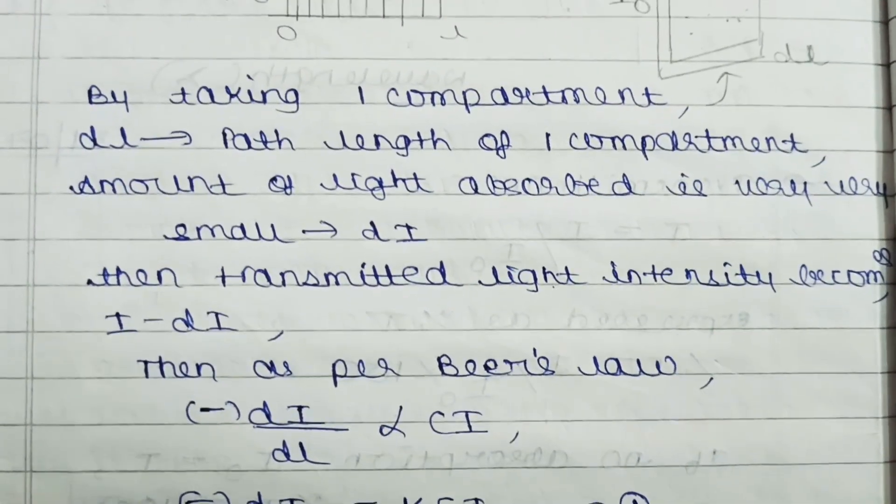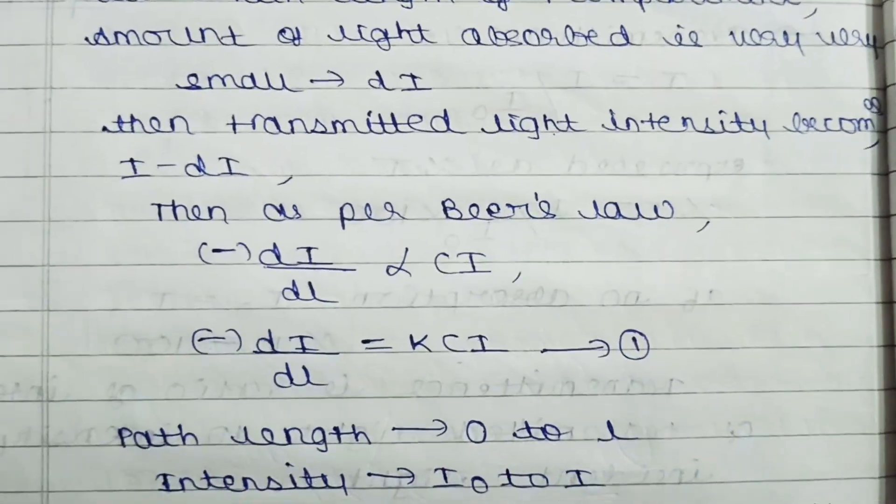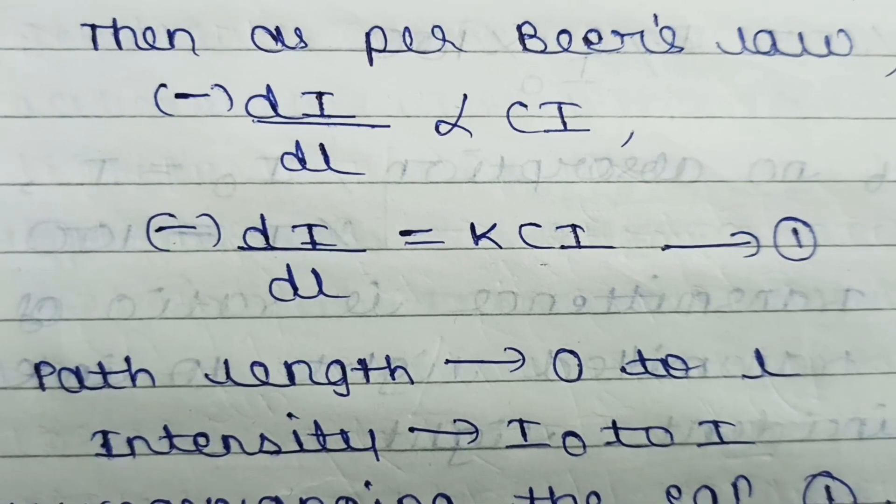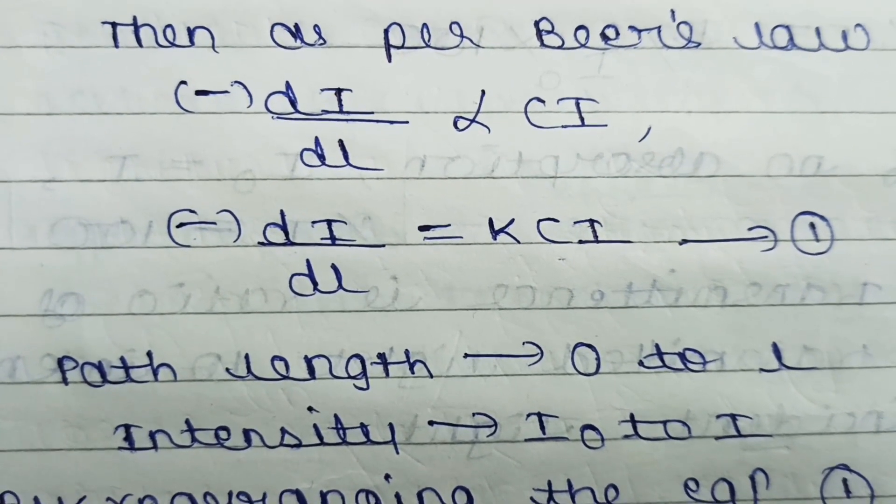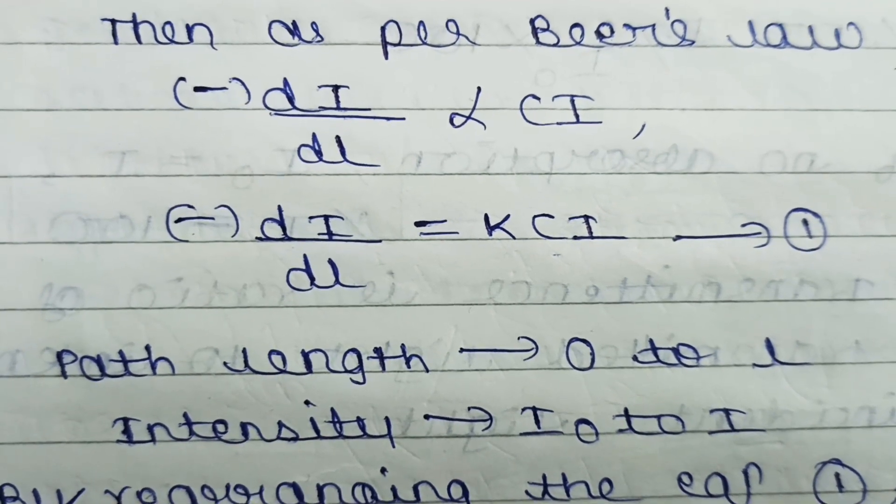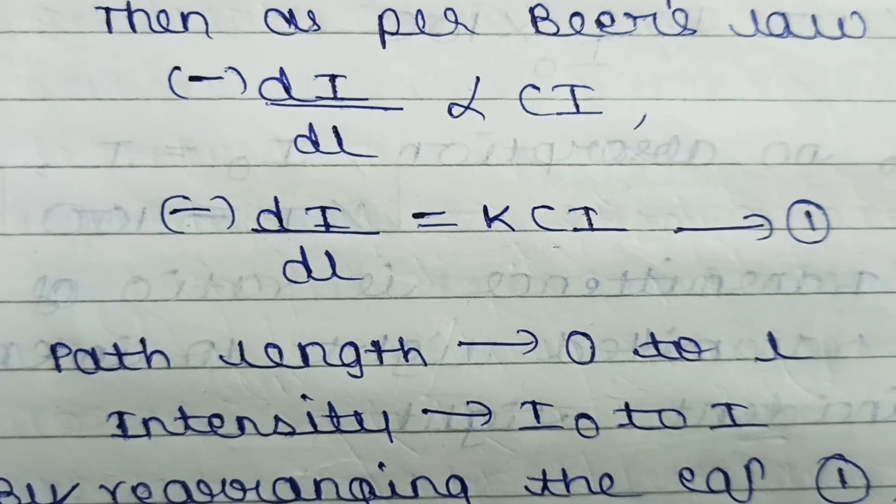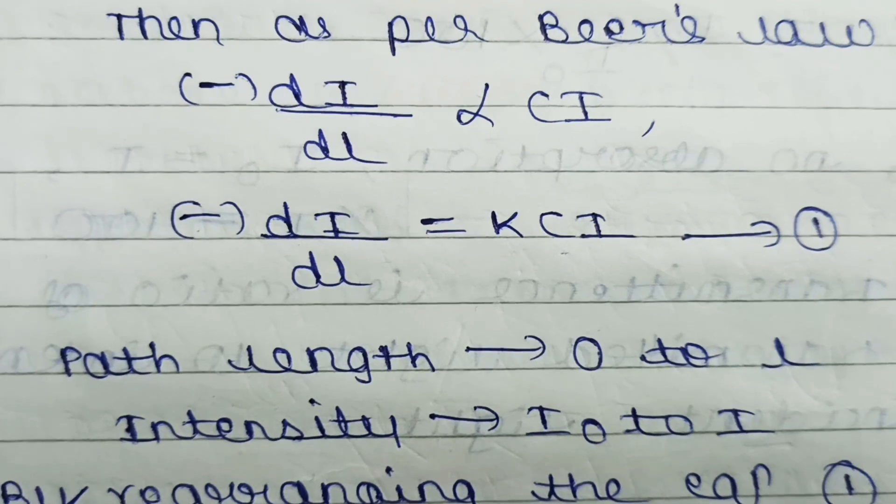Then, as per Beer's law, when chromatic light is passed through a solution of absorbing substances, the decrease in intensity is represented with a minus sign: intensity DI with respect to path length DL.